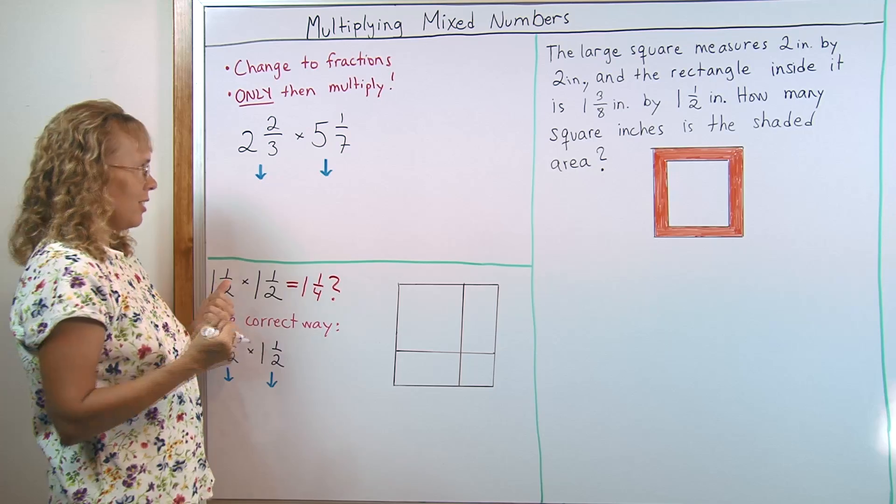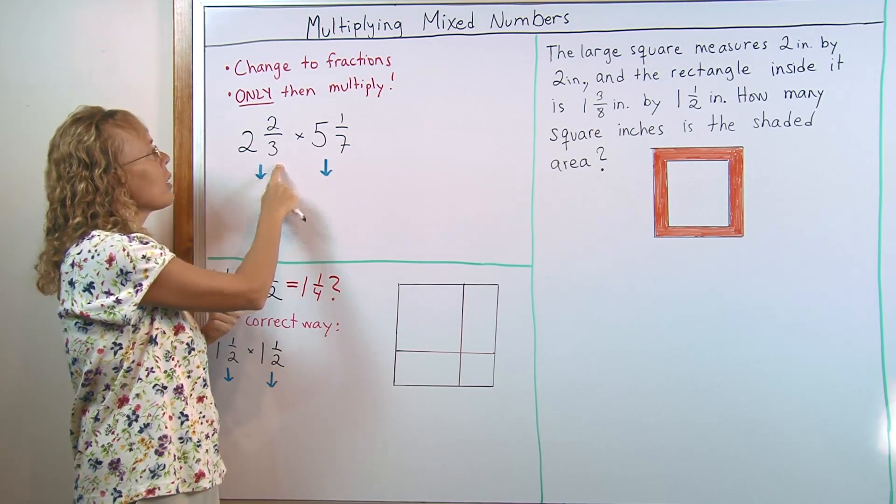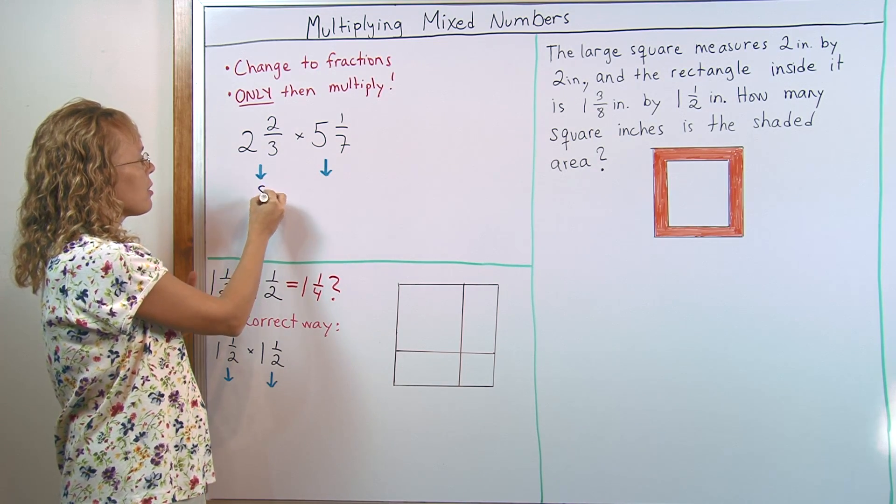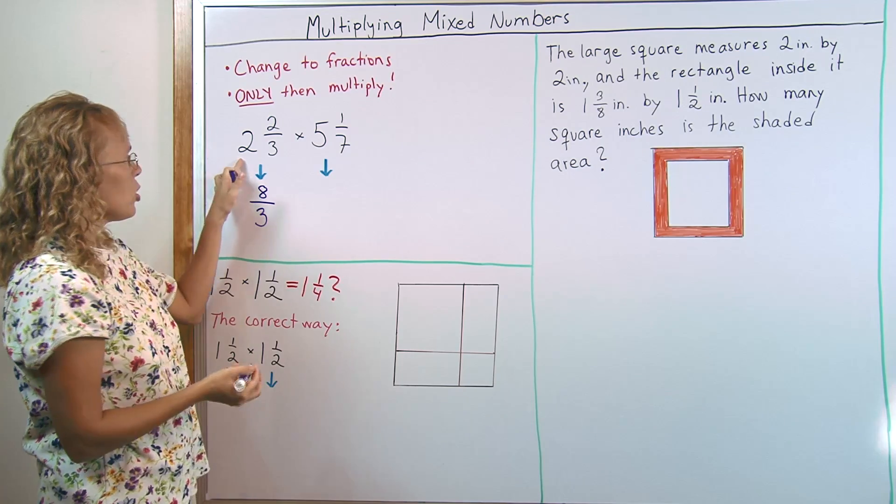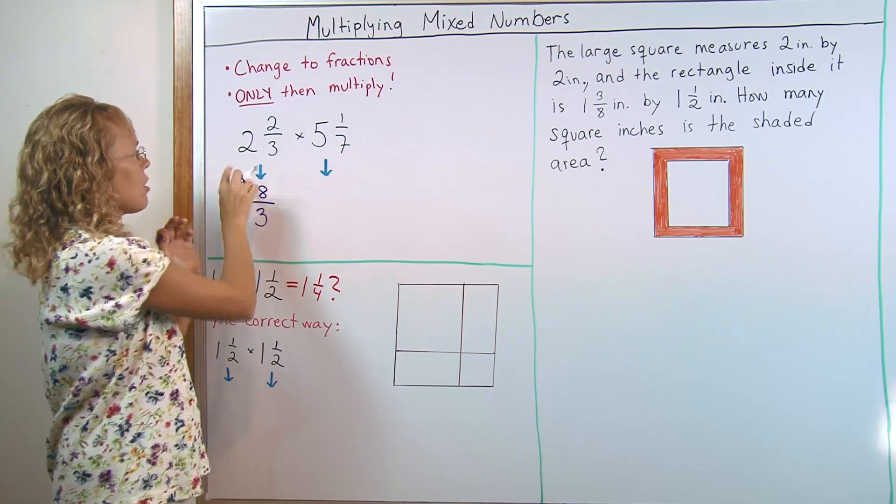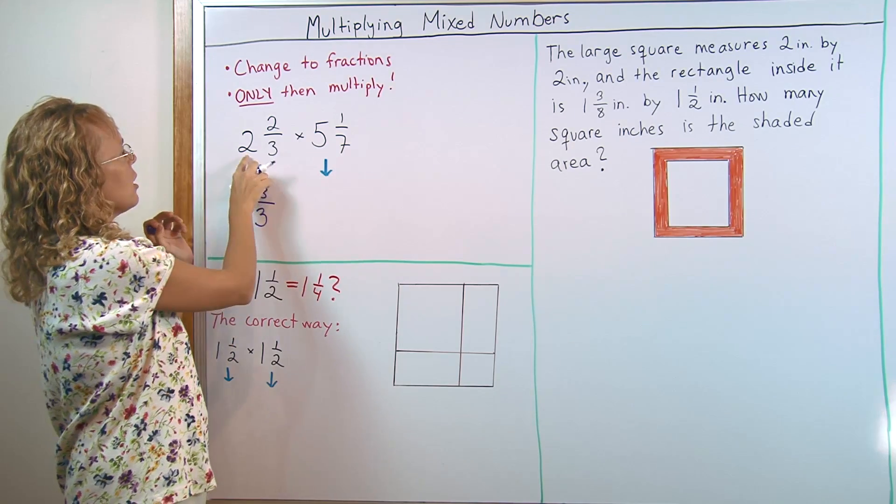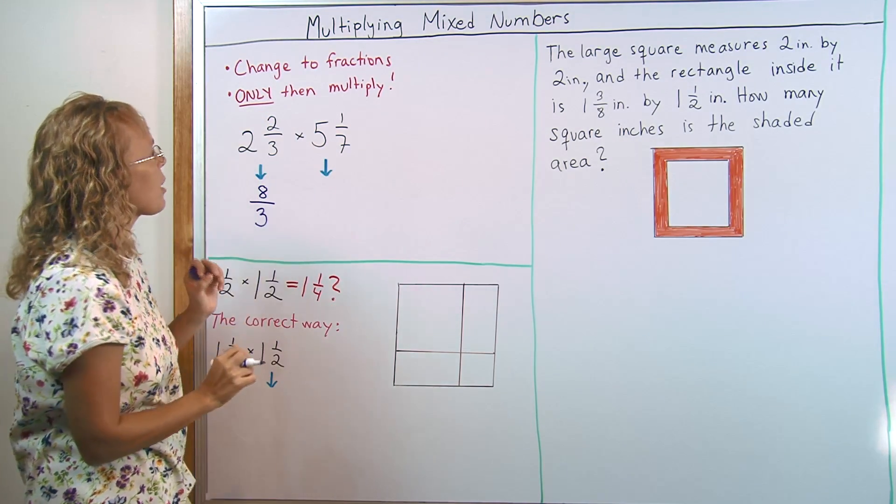There's a shortcut. You go 2 times 3, which is 6, plus 2 is 8. That gives you the numerator. And the denominator doesn't change, 3. Basically 2 whole pies, you count how many thirds are in 2 whole pies. There's 3 and 3, 6 thirds in these 2 whole pies. And then you add the 2 thirds from there.